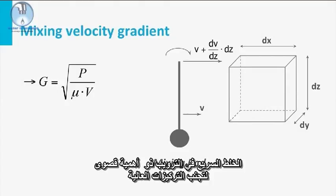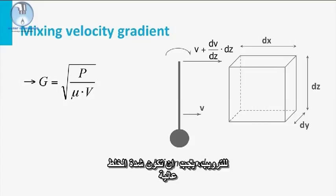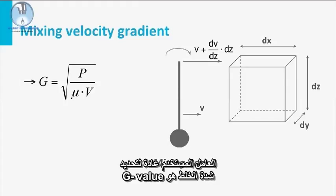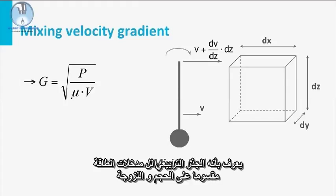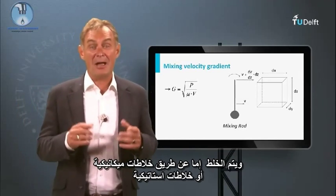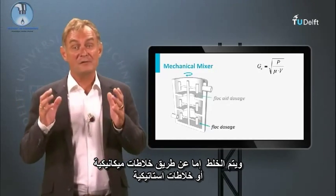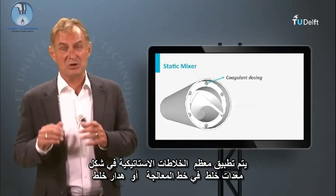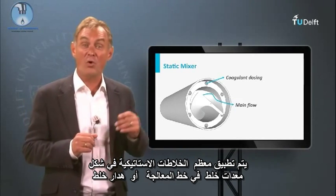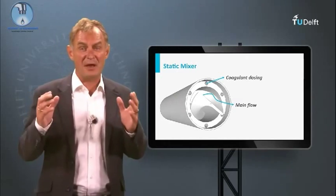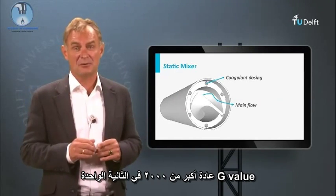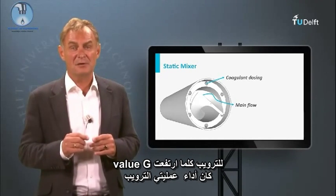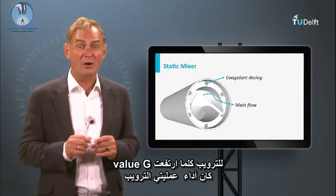Rapid mixing of coagulant is of utmost importance to avoid locally high concentrations of coagulant. For coagulation, the mixing intensity must thus be high. A commonly used parameter for determining the mixing intensity is the G-value, defined as the square root of the power input divided by the volume and the viscosity. Mixing is done by either mechanical mixers or static mixers — mostly static mixers in the form of inline mixing devices or weir mixers. G-values larger than 2000 per second are common, and the higher the G-value of coagulation, the better the performance of the coagulation-flocculation process.